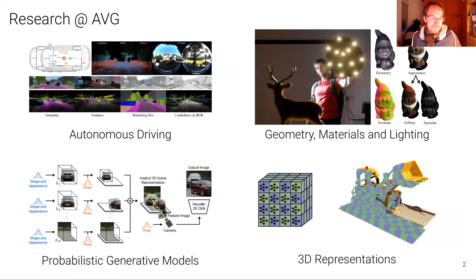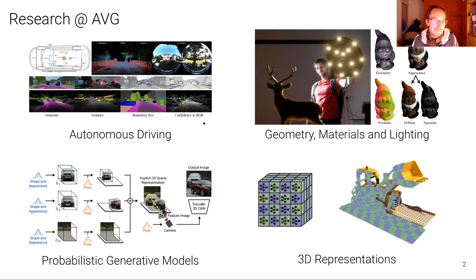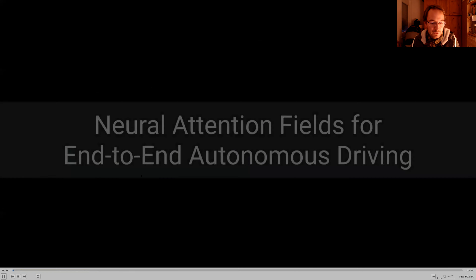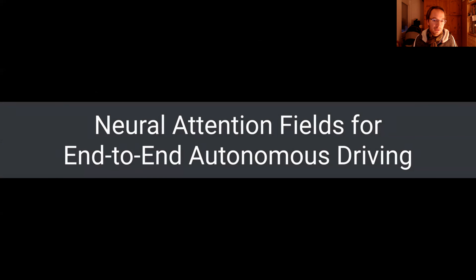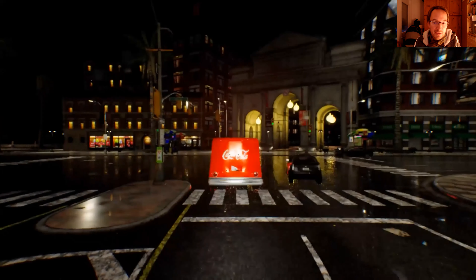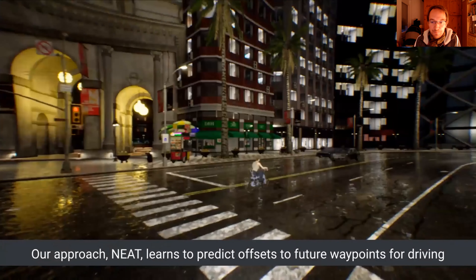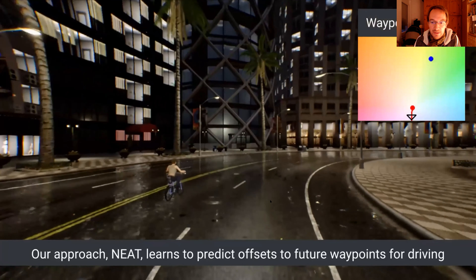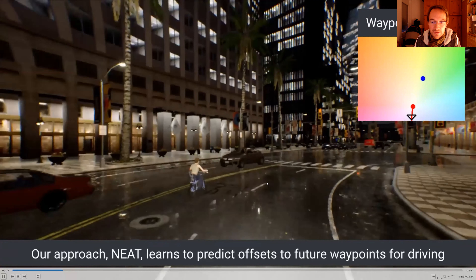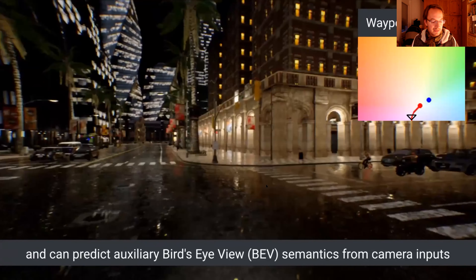We are the Autonomous Vision Group because we work at the intersection of robotics and computer vision, and we want to make robot systems work. For that, we need to solve perception. We work on all kinds of problems — for example, self-driving. We have just released the successor of the KITTI dataset, which is the KITTI 360 dataset. We also work on the self-driving problem itself, trying to combine perception and control and train these models end-to-end, but I'm not going to talk about this today.